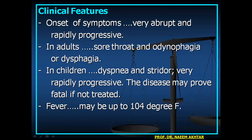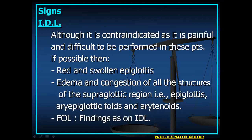Clinical features: onset is very abrupt and rapidly progressive. In adults, the patient will have sore throat and odynophagia or dysphagia. In children, dyspnea and stridor develop very rapidly, and the disease may prove fatal if untreated. Fever may be up to 104 degrees Fahrenheit. On indirect laryngoscopy — though contraindicated as it is painful and difficult, especially in children —